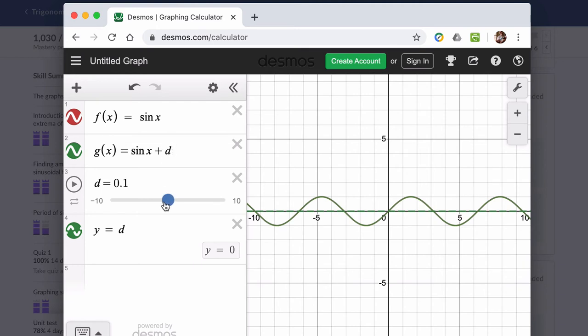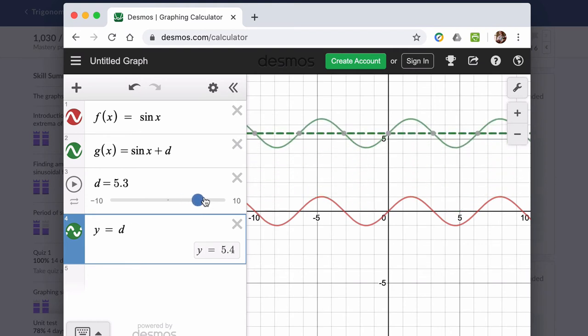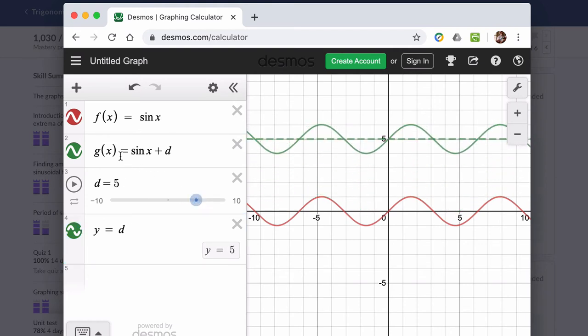Watch what happens. If I go up to 1, see how the midline follows the value of d. d is now 1, which is also our midline at 1. If I raise it up to 5, this would be g of x equals the sine of x plus 5. And 5 is that midline.